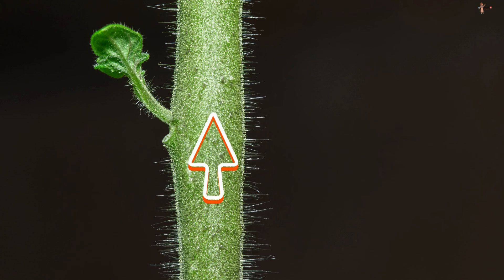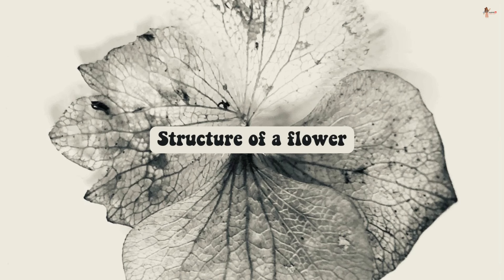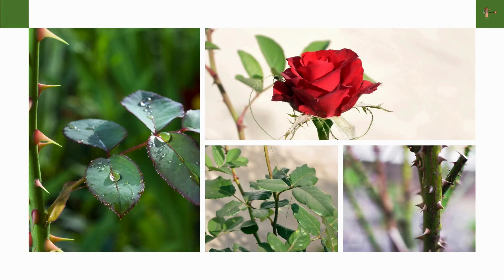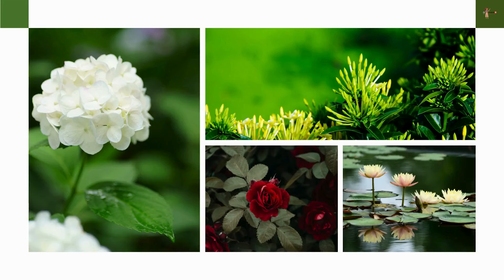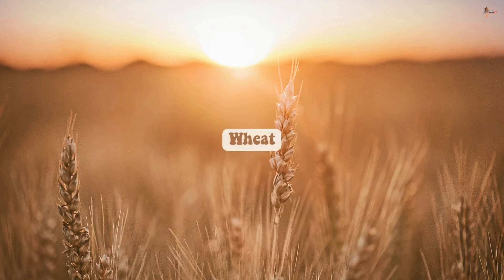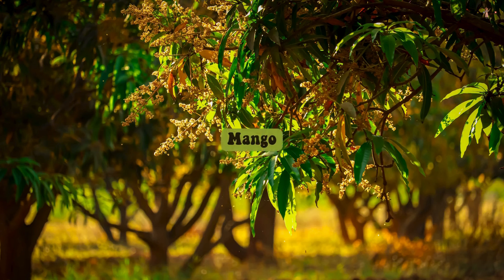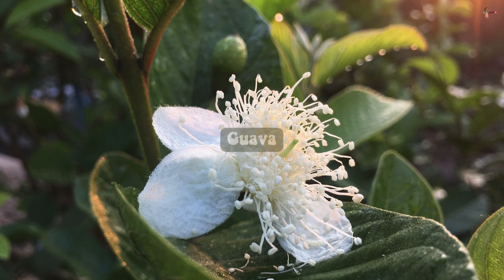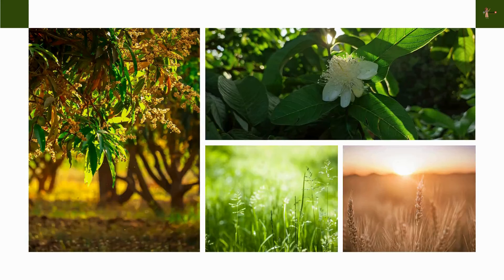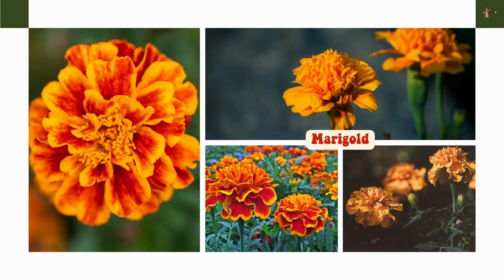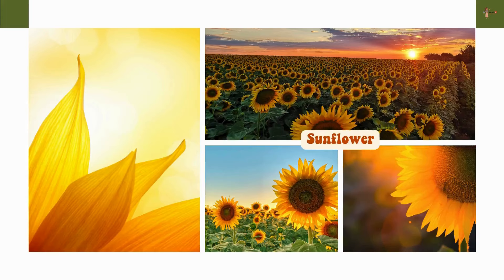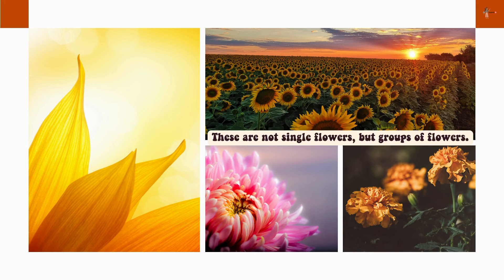Now we will study the structure of a flower. Out of the given pictures of a rose plant, which one do you think will help you best recognize the plant? Are all flowers colorful? Have you ever seen flowers on grass, wheat, maize, mango, or guava? Are these brightly colored? When choosing flowers to study, avoid using marigold, chrysanthemum, or sunflower — you will learn in higher classes that they are not single flowers but groups of flowers.